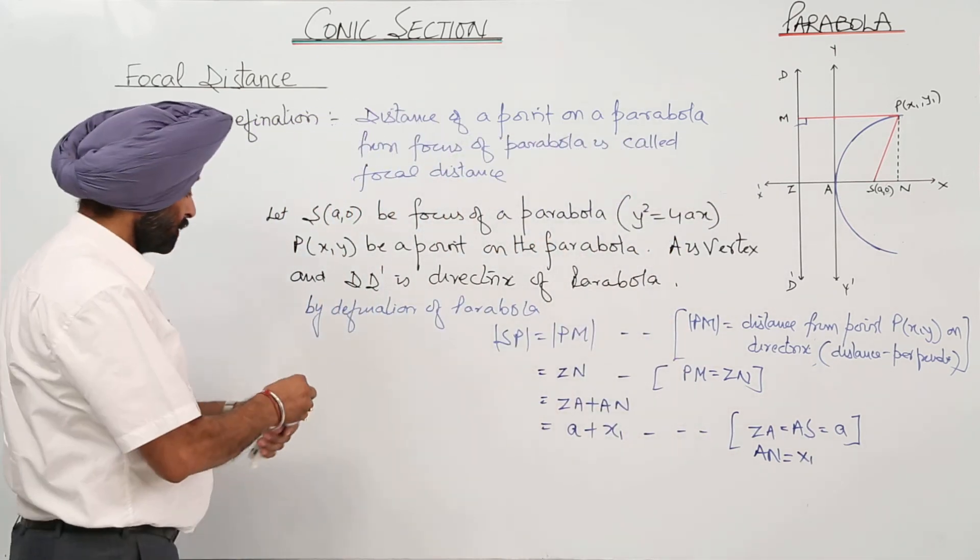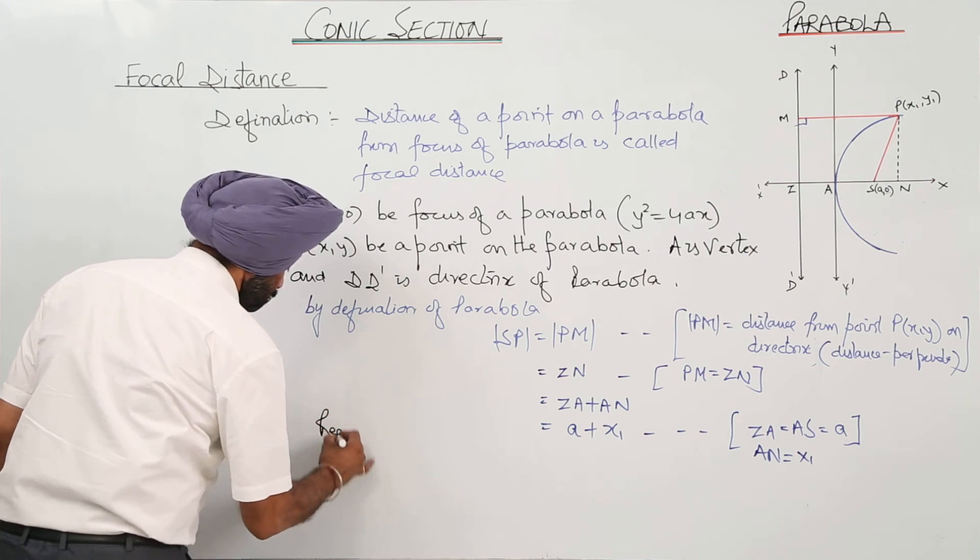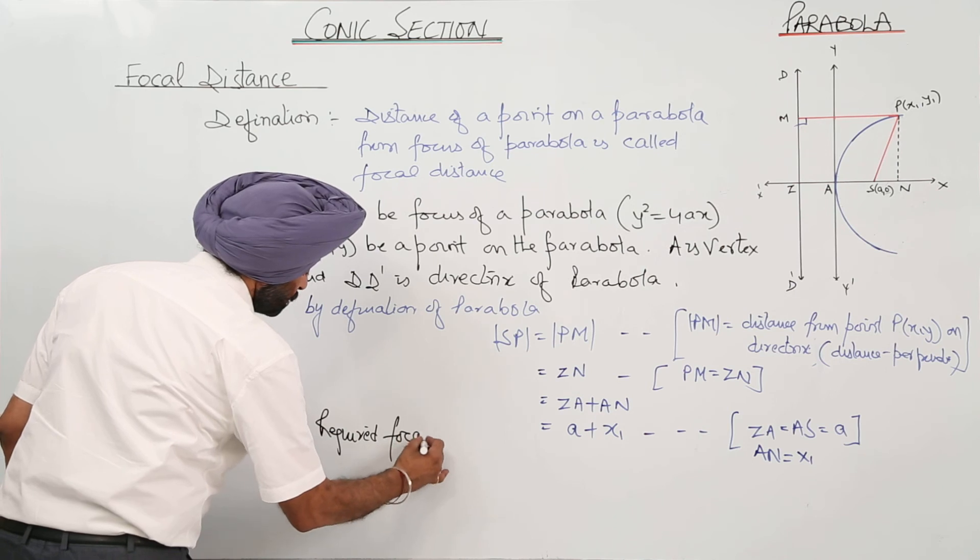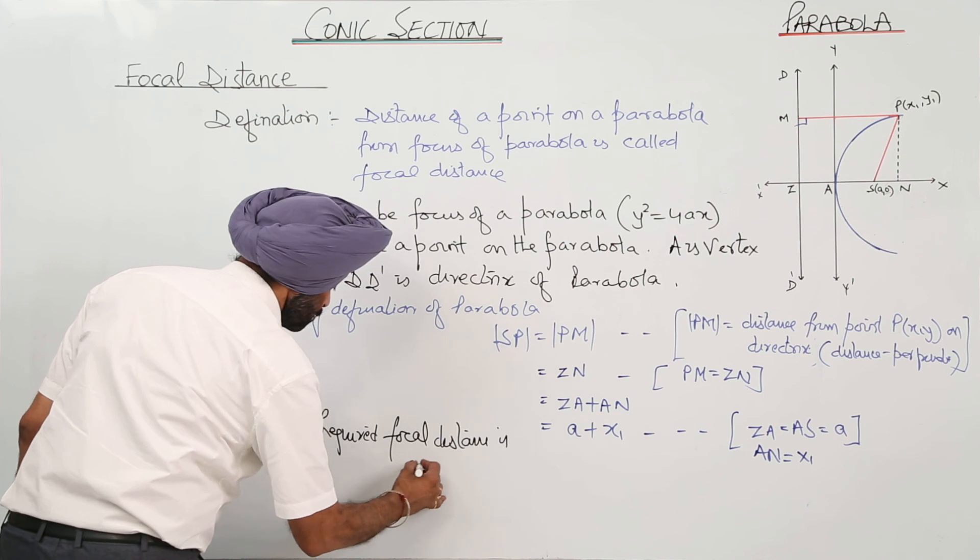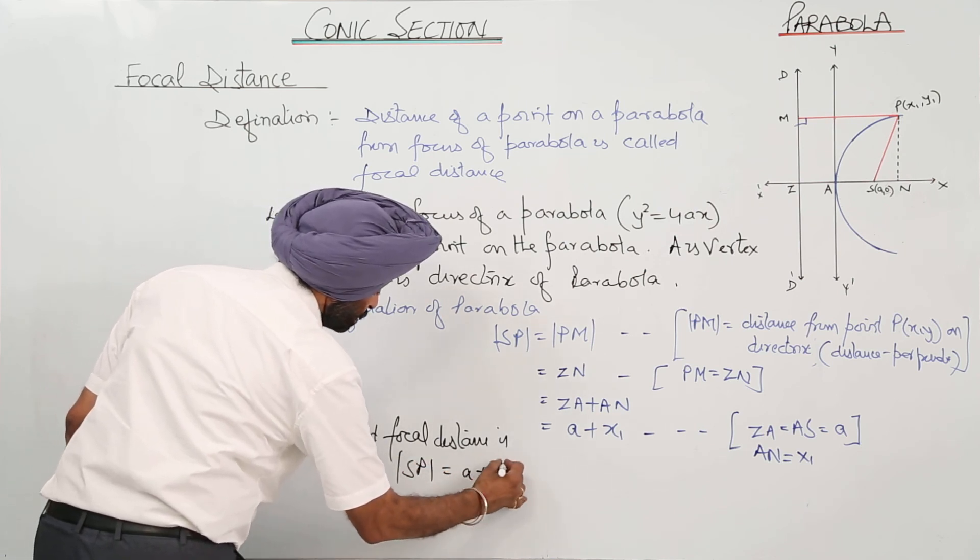Is it clear? So, the required focal distance is SP, and that is a plus x₁.